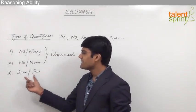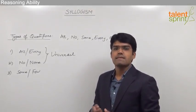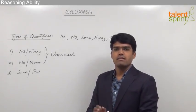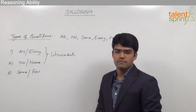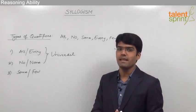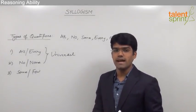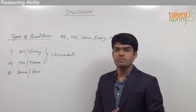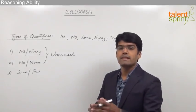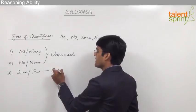The third type of quantifier is some or few. When we say some A's are B's, it means some of the elements in set A are a part of set B. Similarly, when we say some A's are not B's, that means some of the elements in set A are not a part of set B. In these two cases we are not referring to every object in the given set. So the quantifier some or few refers to a certain number of objects in the given set, and is generally referred to as a particular quantifier.